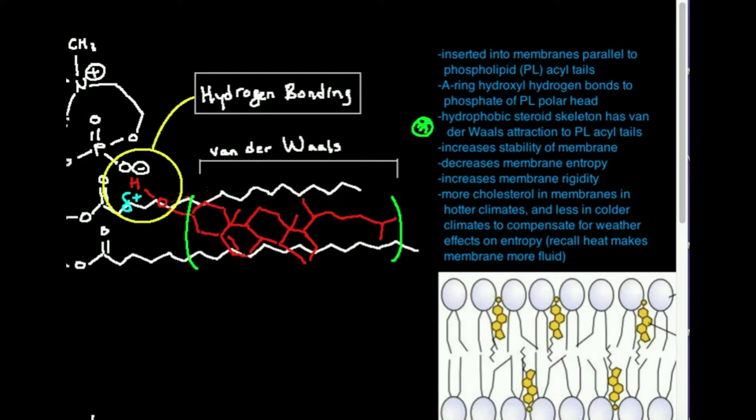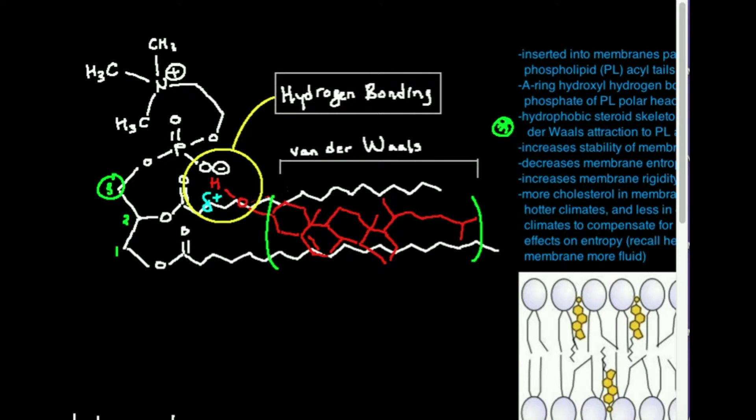That hydrophobic skeleton of cholesterol has van der Waals attraction to the phospholipid acyl tails. So those tails, these zigzags, have essentially the same type of non-polarity that the steroid nucleus has, they're both hydrophobic, and so they're going to have van der Waals attractions, and that's going to tend to stabilize these tails in their position.